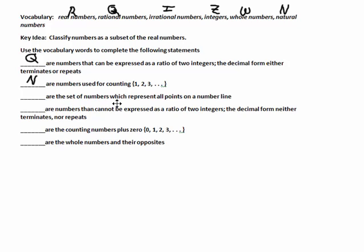What are the set of numbers which represent all points on a number line? Every point along the number line would be all the integers. And what are the numbers that cannot be expressed as a ratio? Emphasis on the cannot be expressed as a ratio. That would be irrational, so I'm going to give that the I.